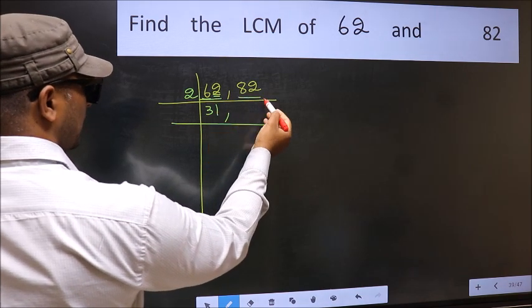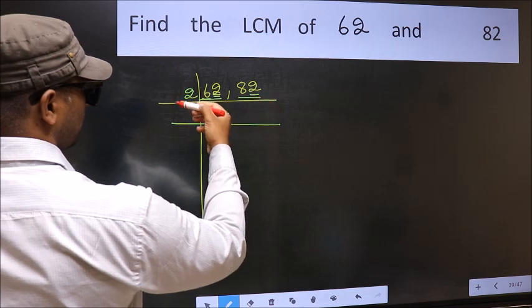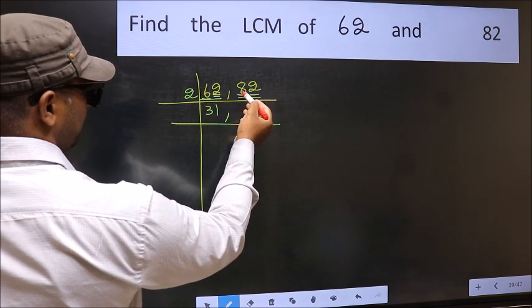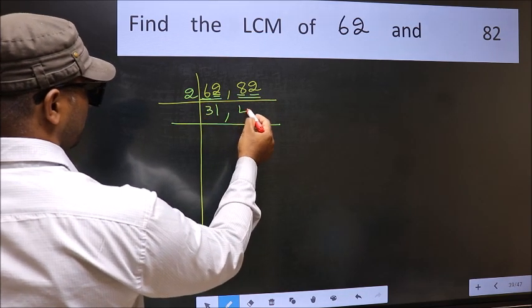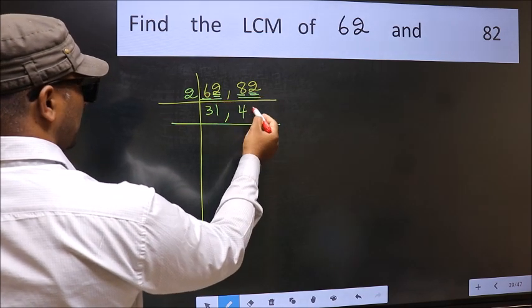Now the other number, 82. Last digit is even, so this is divisible by 2. First number is 8. When do we get 8 in 2's table? 2 times 4 is 8. The other number is 2. When do we get 2 in 2's table? 2 times 1 is 2.